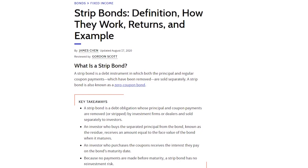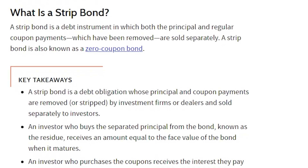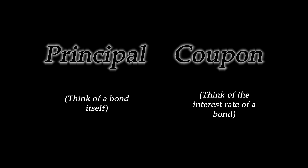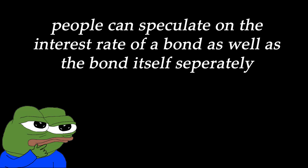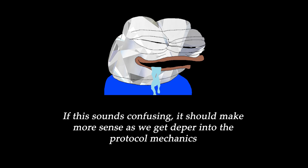Bond stripping, for those who don't know, is the process of stripping a debt obligation into its principal and coupon components. In TradFi, this allows people to speculate on both the principal component and its interest rate component. If this sounds confusing, it should make more sense as we get deeper into the protocol mechanics.